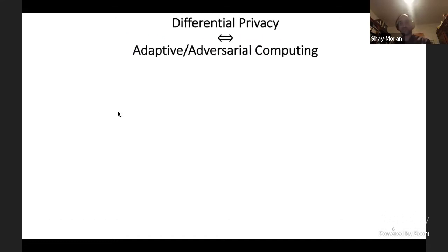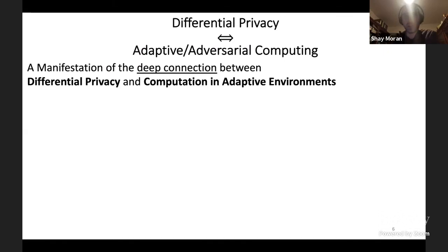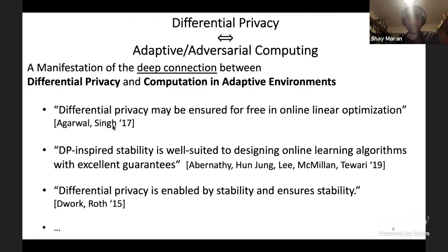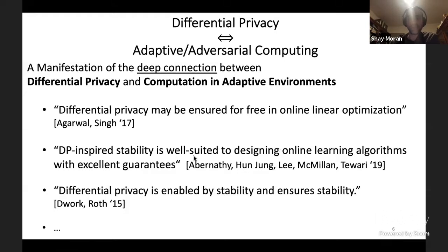While this gives a general abstract result, it manifests connections that were previously noticed and exploited. There are results showing that online learning algorithms are often automatically differentially private, and also works in the opposite direction where differential privacy is used to design online algorithms with excellent guarantees. We give a formal and abstract manifestation of these connections.